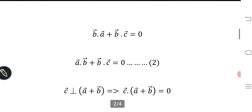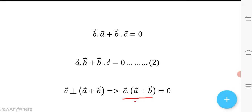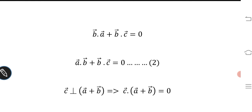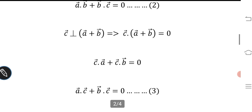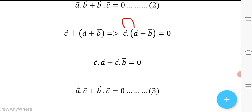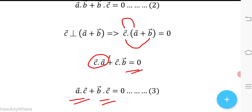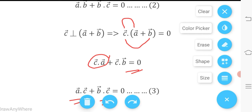Also, vector c is perpendicular to (a + b). So we can write c · (a + b) = 0, which expands to c·a + c·b = 0, giving c·a + b·c = 0. Let this be equation number 3.